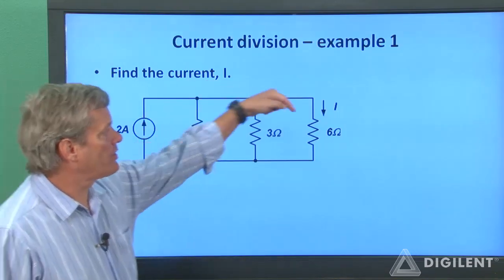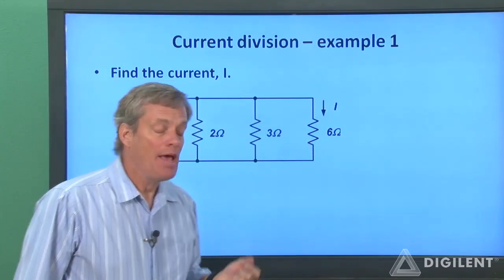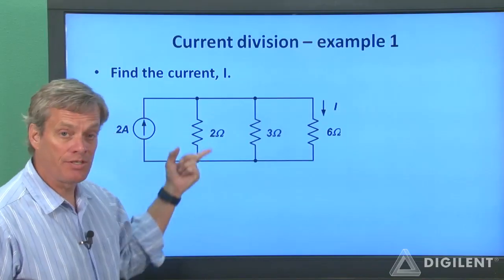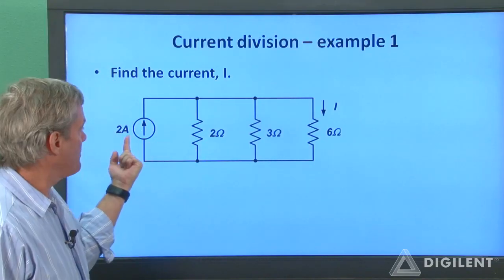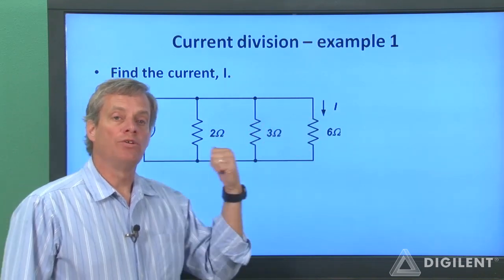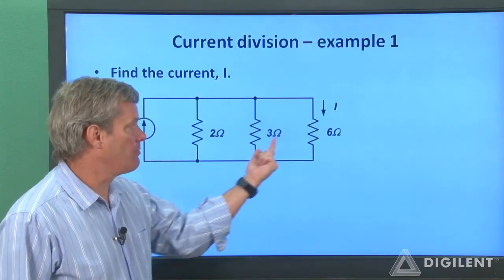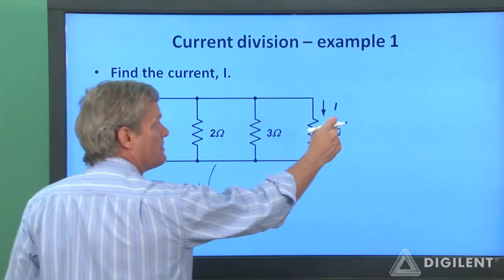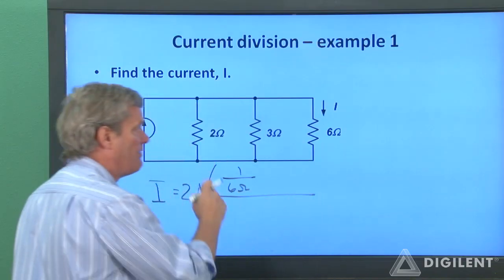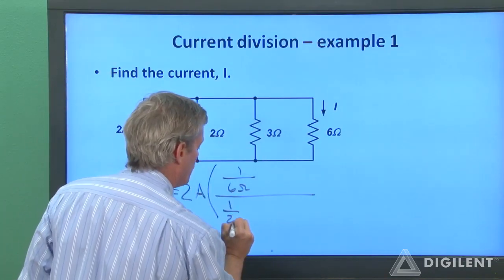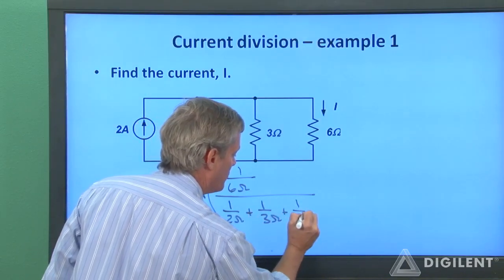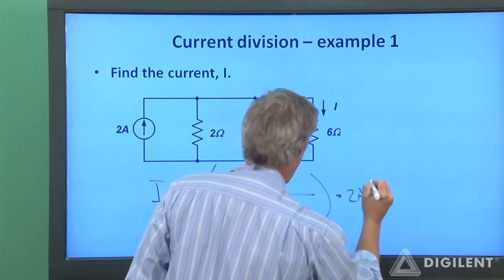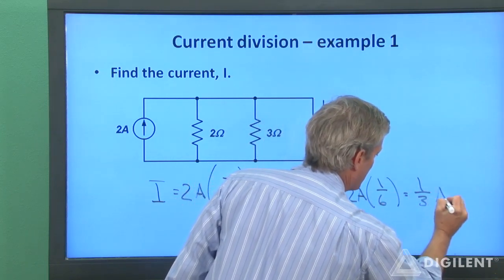In our first example, we want to find the current I through a 6-ohm resistor. Three resistors are all in parallel — by KVL around any loop, they all share the same voltage. The total current into this parallel combination is 2 amps. Using the general current divider formula, I = 2 amps × (1/6 Ω) ÷ (1/2 Ω + 1/3 Ω + 1/6 Ω). The denominator simplifies to 1/1 Ω, so I = 2 × (1/6) = 1/3 amp.